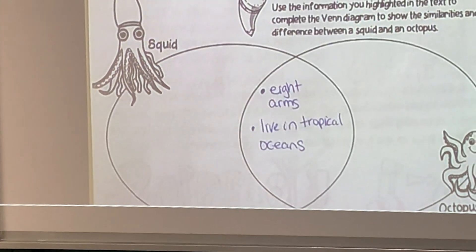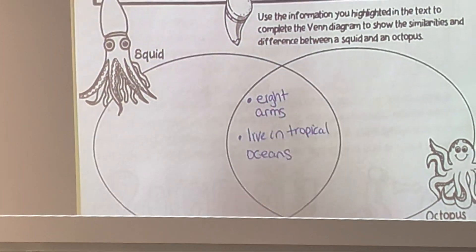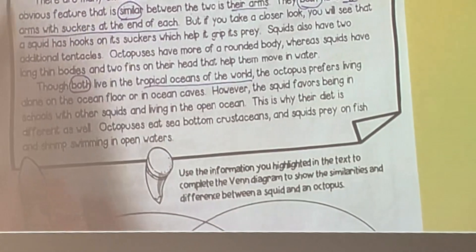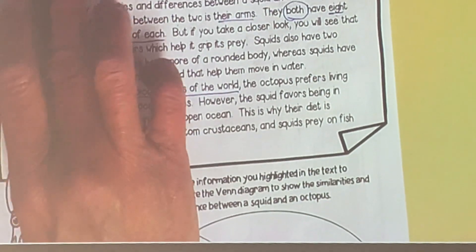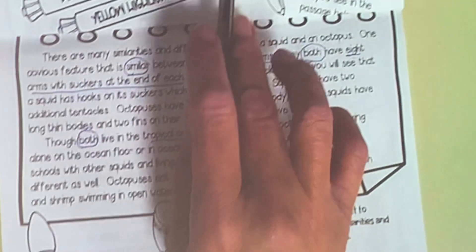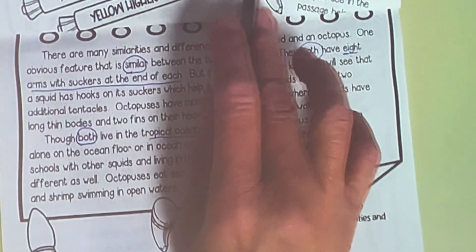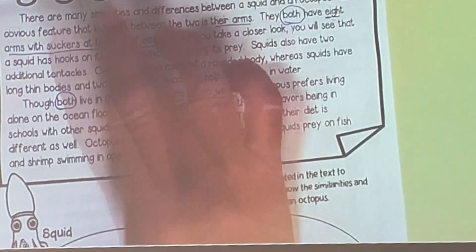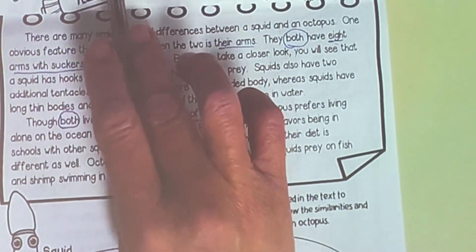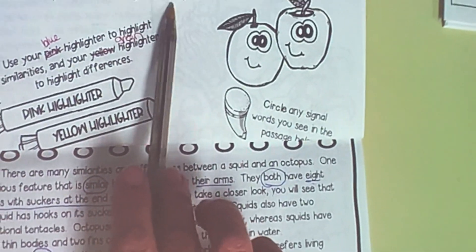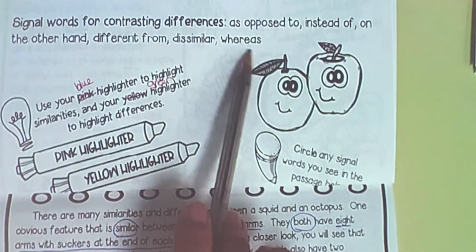So let's look for the words that mean that they are different. Signal words again: as opposed to, instead of, on the other hand, different from, dissimilar, whereas.